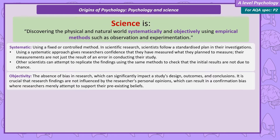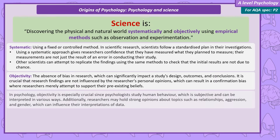Objectivity is about a lack of bias, so the research design, results, and conclusions are not influenced by the personal opinions of the researcher — just an attempt to support what they already believe to be true. Objectivity is possibly more of a problem with psychology than other sciences, because psychologists are studying humans and are likely to have strong opinions on the behaviours they study, like relationships, aggression, and gender.